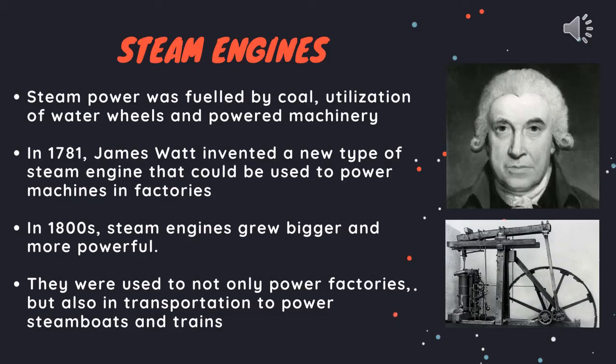Steam engine. Steam power was fueled by coal, utilization of water wheels and powered by machinery. In 1781, James Watt invented a new type of steam engine that could be used to power machines in factories. In the 1800s, steam engines grew bigger and more powerful. They were used to not only power factories but also in transportation to power steamboats and trains.